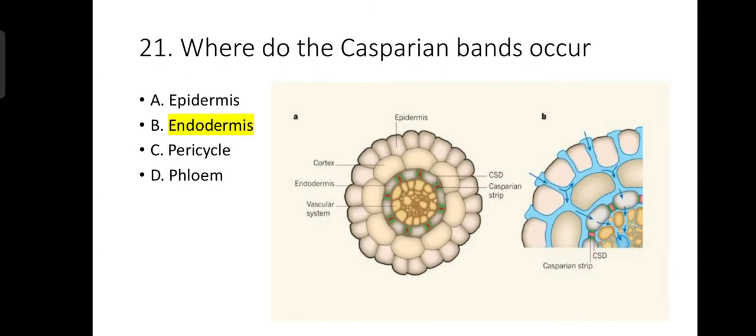Number 21: Where do the Casparian bands occur? The Casparian bands occur in the endodermis.